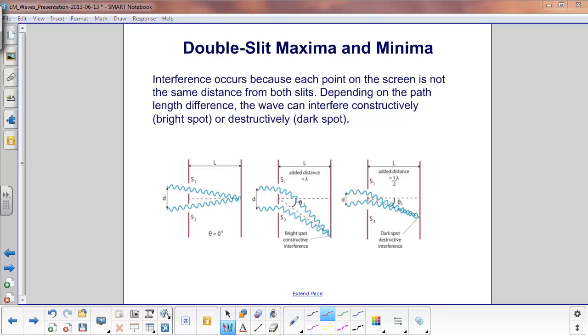The key point that explains why interference occurs is the distance that the two sources of light travel to get to the observation screen. These two waves here travel the same distance to get over here.